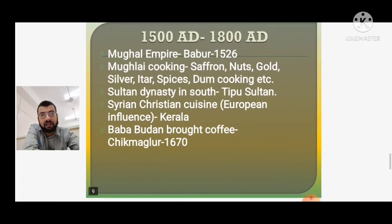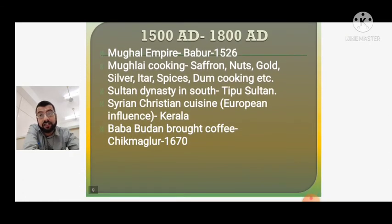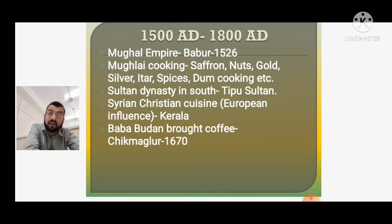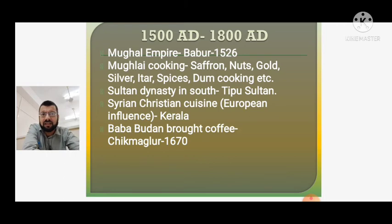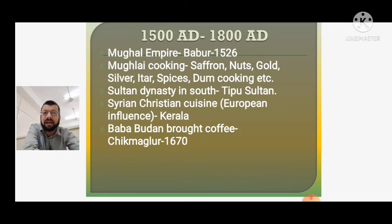From 1500 to 1800 AD came the Mughal Empire — we already spoke about Babur. With the Mughals came the Mughalai cooking style: use of saffron, nuts, gold, silver, ittar, spices, the dum cooking style, tandoori cooking, kebabs, and marination. All these things came along with the Mughal Empire.